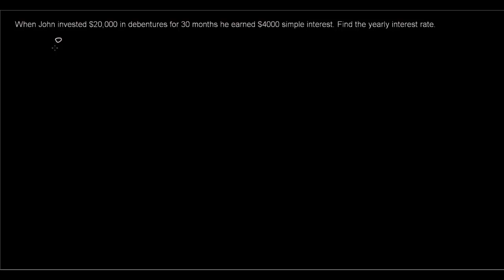So again we write P equals, I equals, R equals, T equals. Now in the test I would suggest that you specify that P is the principle, I is the interest, R is the rate, T is the time in years and so on. But right now you guys know what it means so I'm not going to repeat that. So the principle is $20,000. Interest is $4,000. This tells us here he earned $4,000 simple interest.